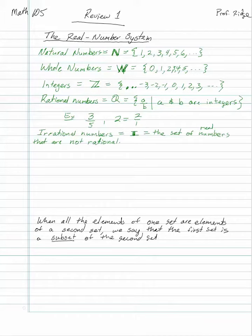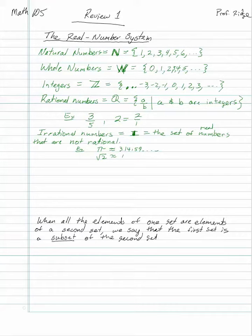Irrational numbers — we use capital I with an extra line. These are numbers that are not rational. Examples include pi, which is about 3.14159 and goes on forever, and the square root of 2, which is approximately 1.414 and never ends. Basically, numbers that are non-repeating, non-terminating decimals.